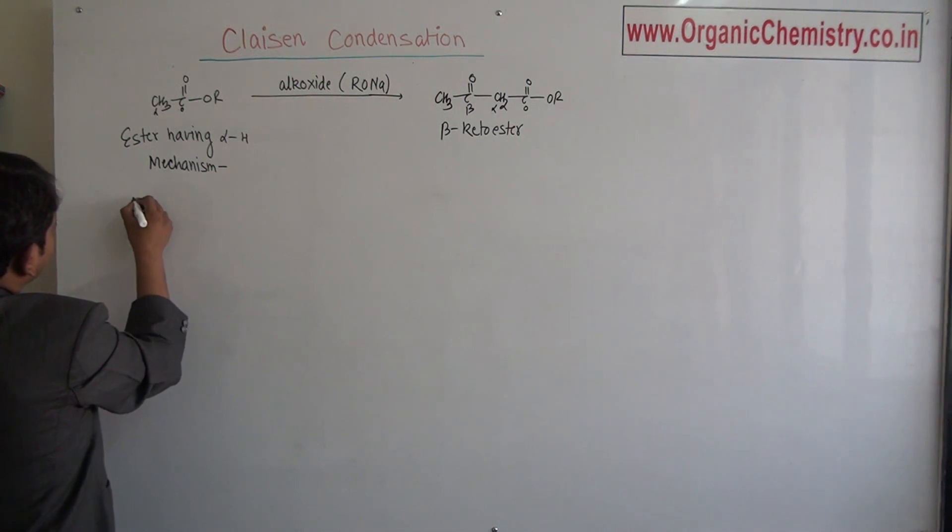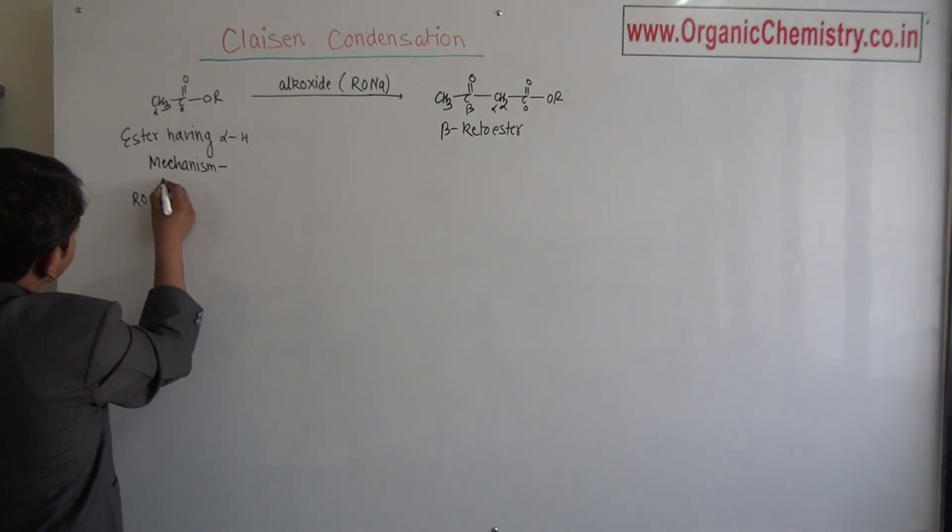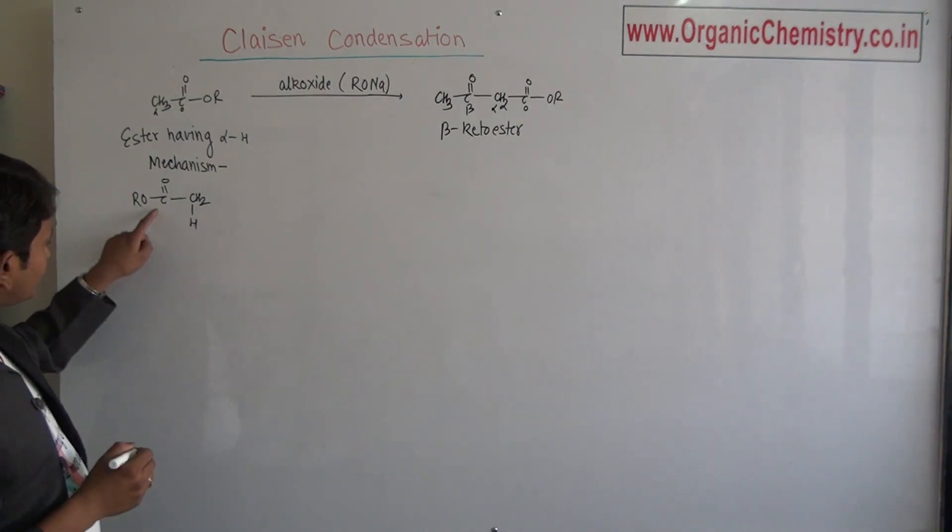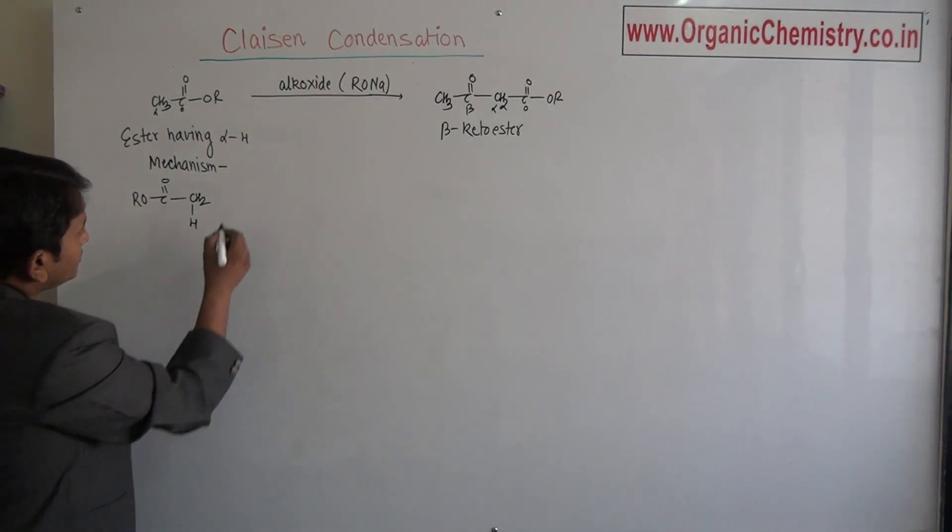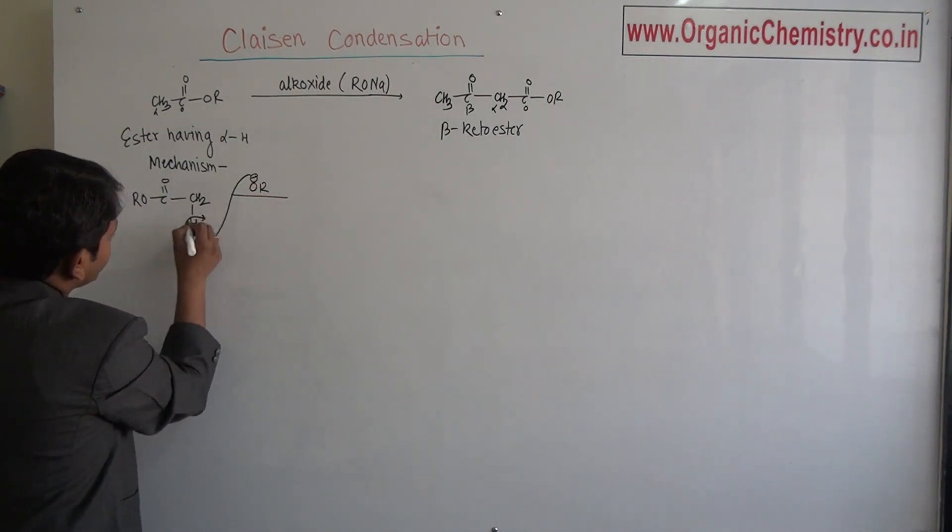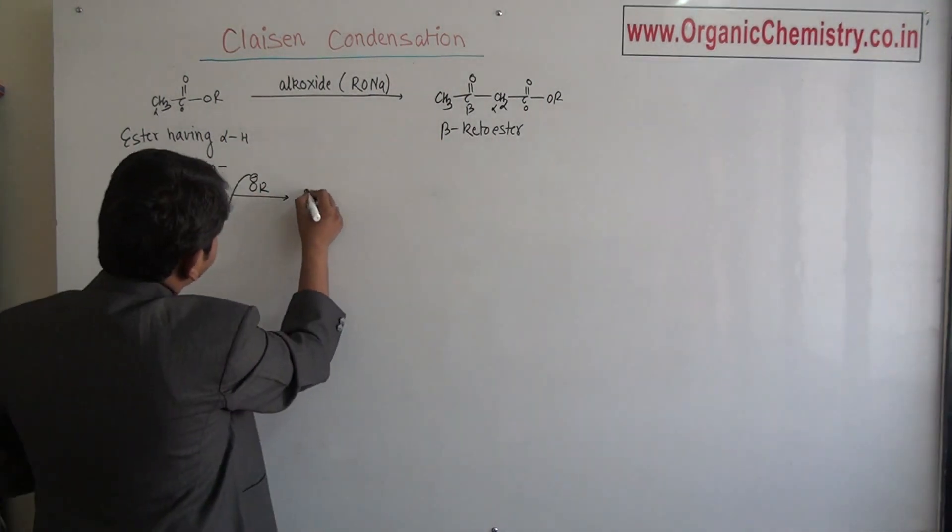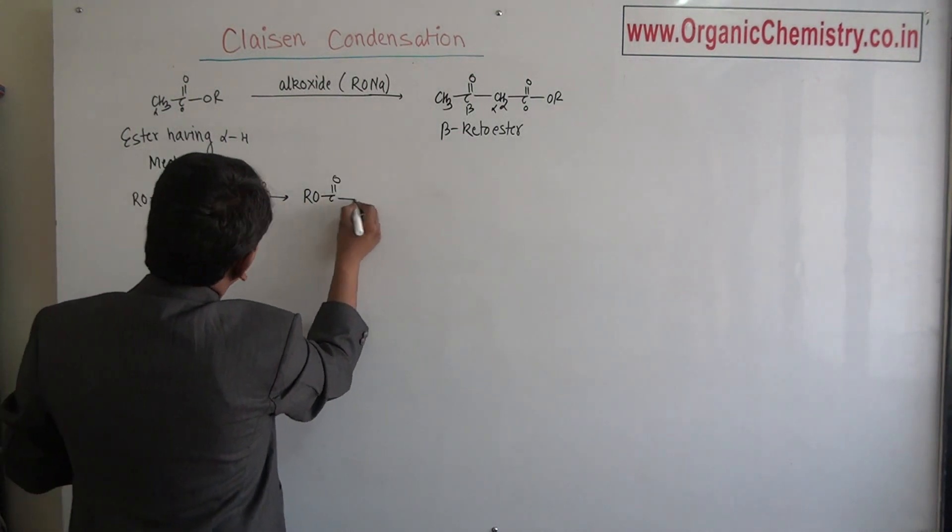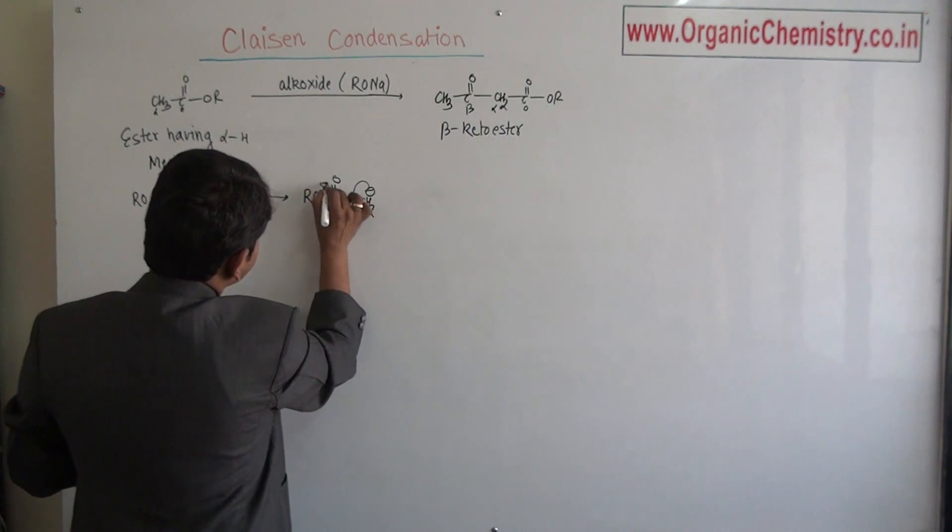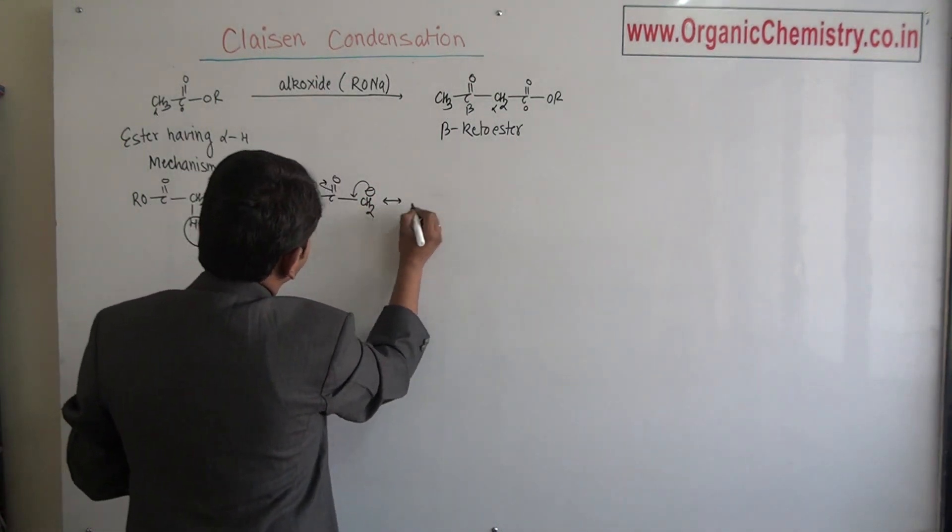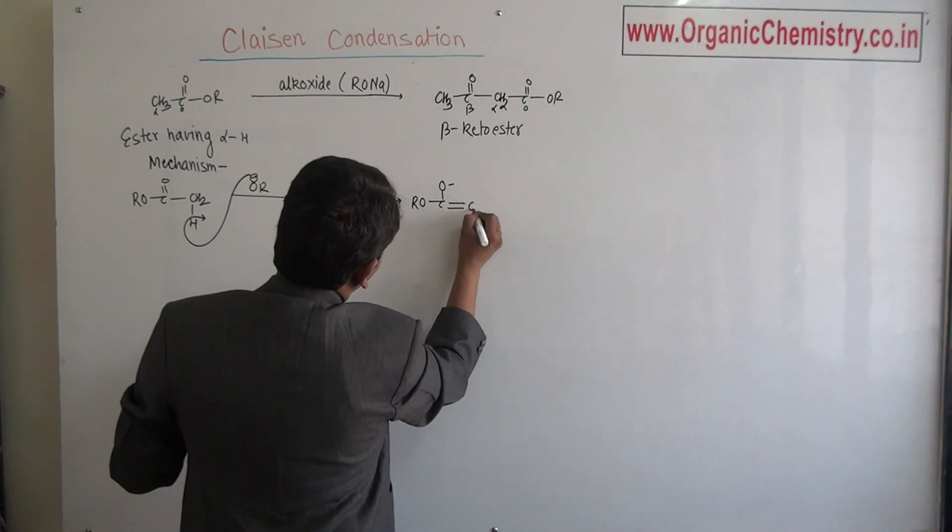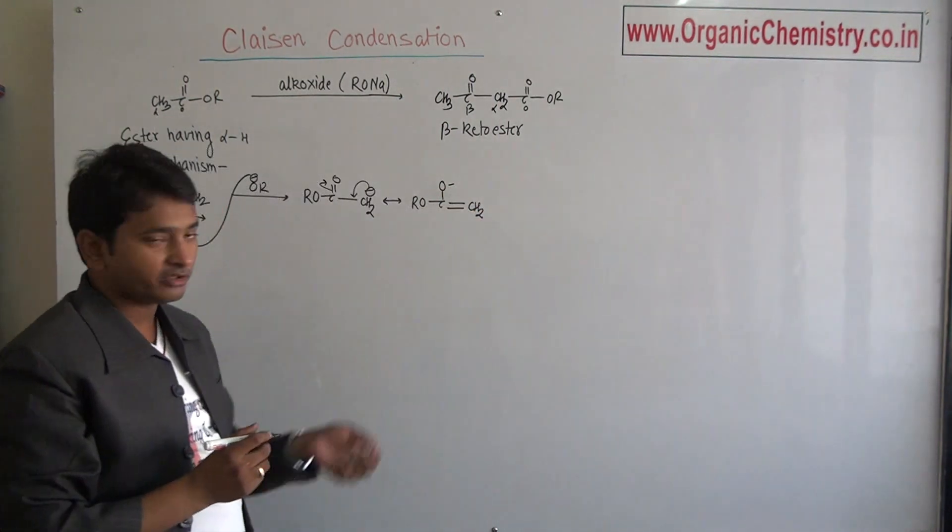Mechanism. R-O-C-O-CH3. This ester also having acidic hydrogen. So this alkoxide extracts this acidic hydrogen to give again enolate ion. This carbon ion which is resonance stabilized to give R-O negative double bond CH2. Enolate ion.